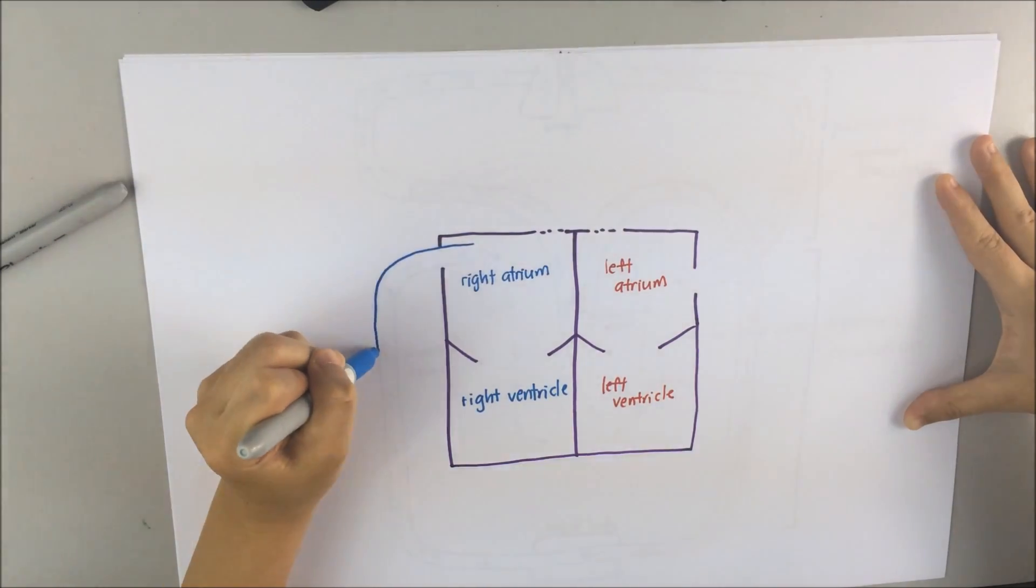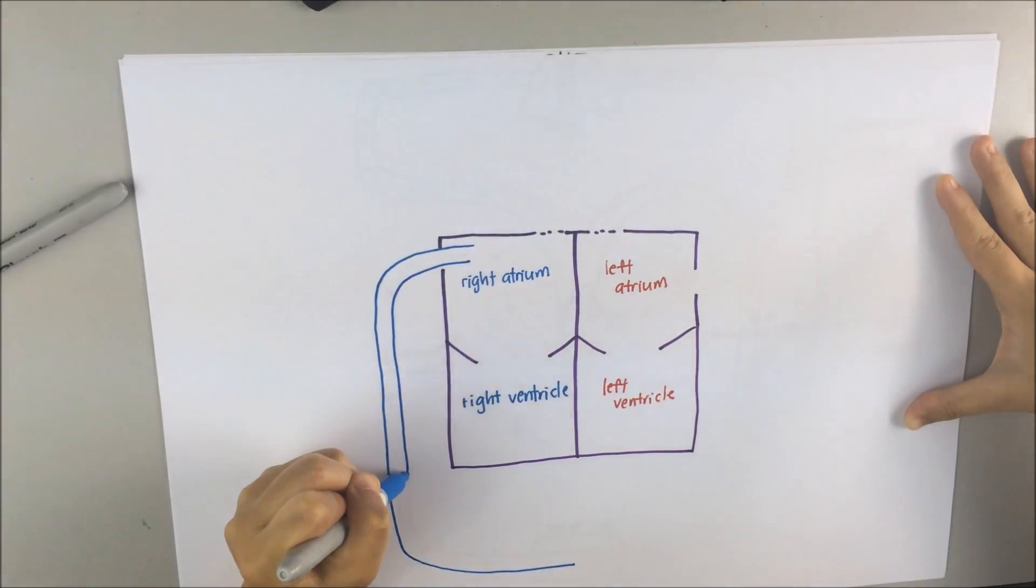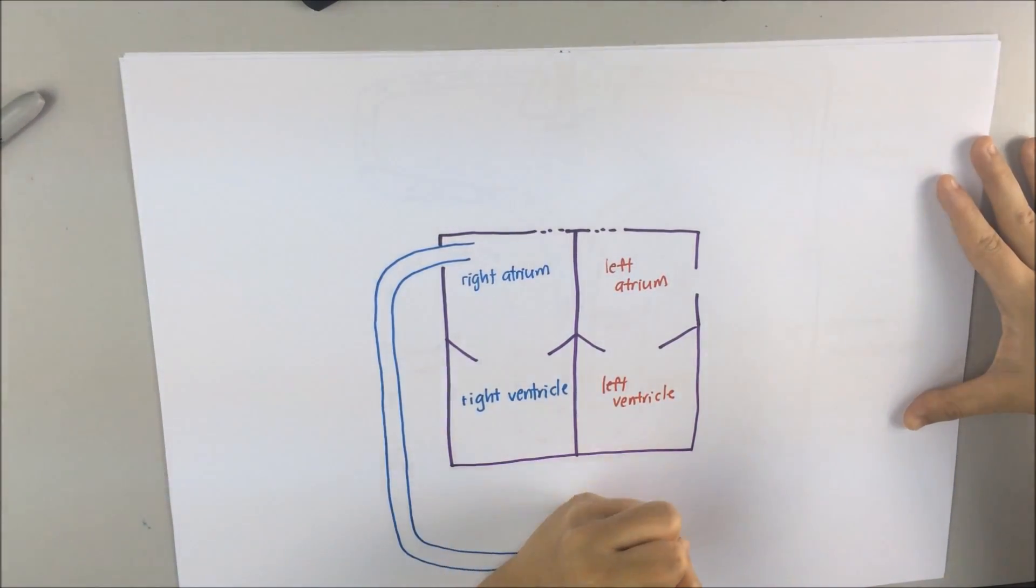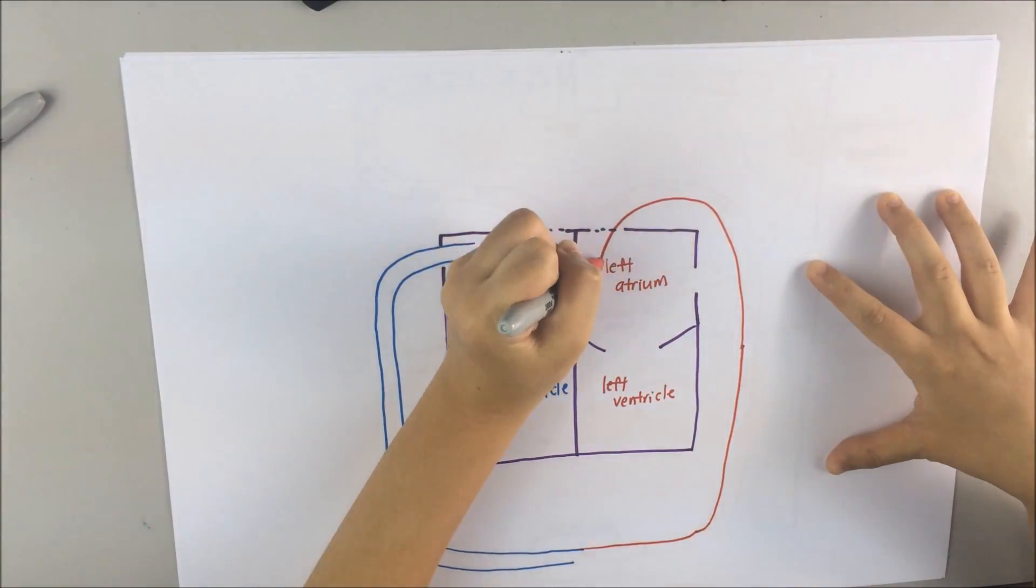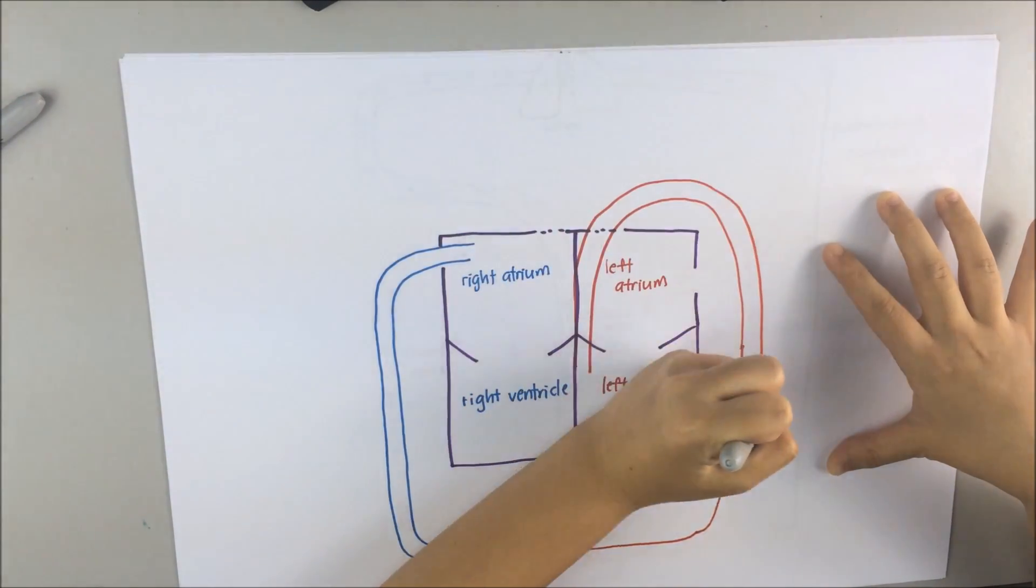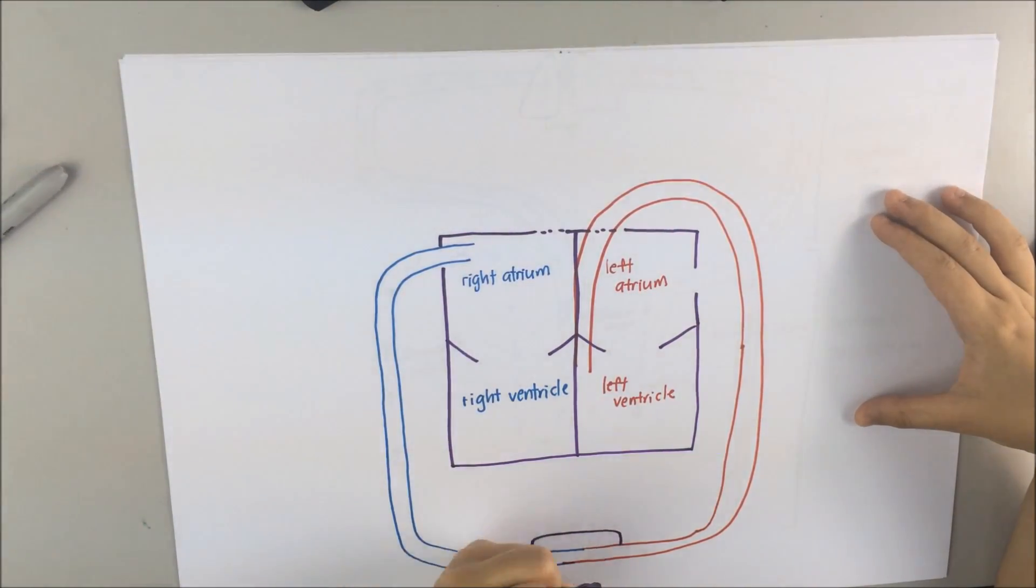Now let's connect the heart with blood vessels. The reason that I use two different colors is for you to understand better. Blue indicates deoxygenated blood, which means that the blood is depleted of oxygen. Red indicates oxygenated blood, which means these are blood with added oxygen.